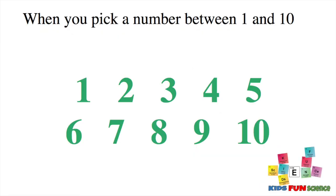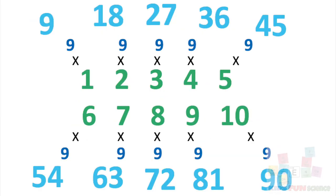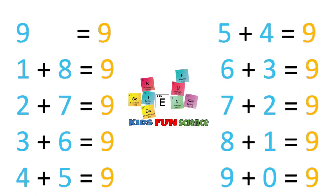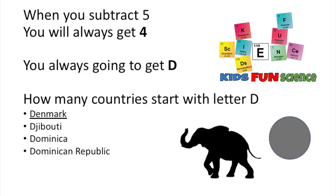So you start off by having your volunteer pick a number from 1 to 10, and then all the numbers in the light blue show up, which when added together always equal 9. And then when you have them subtract 5, you'll always get the number 4, which is always going to lead to the letter D.